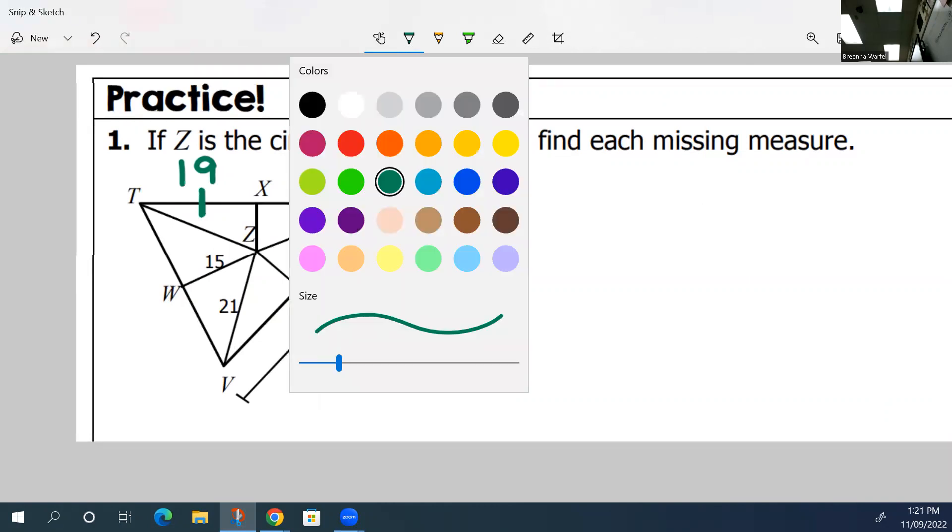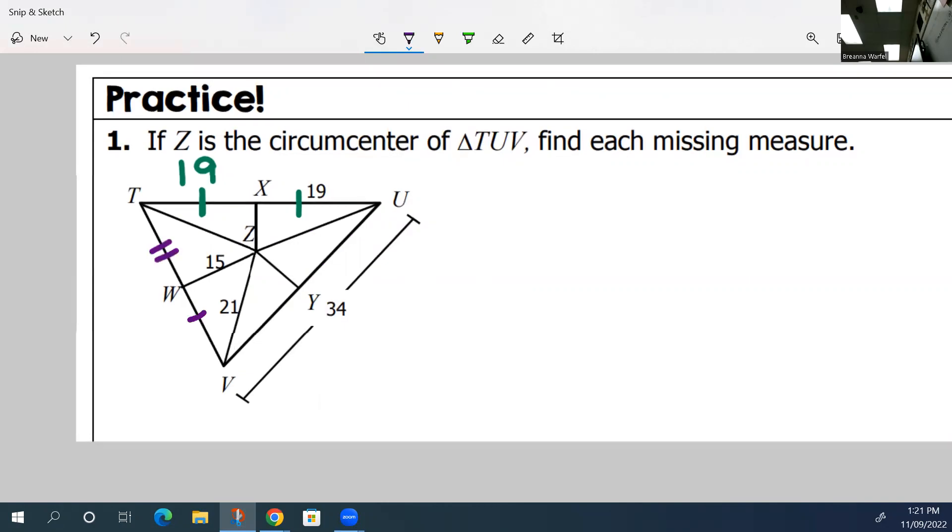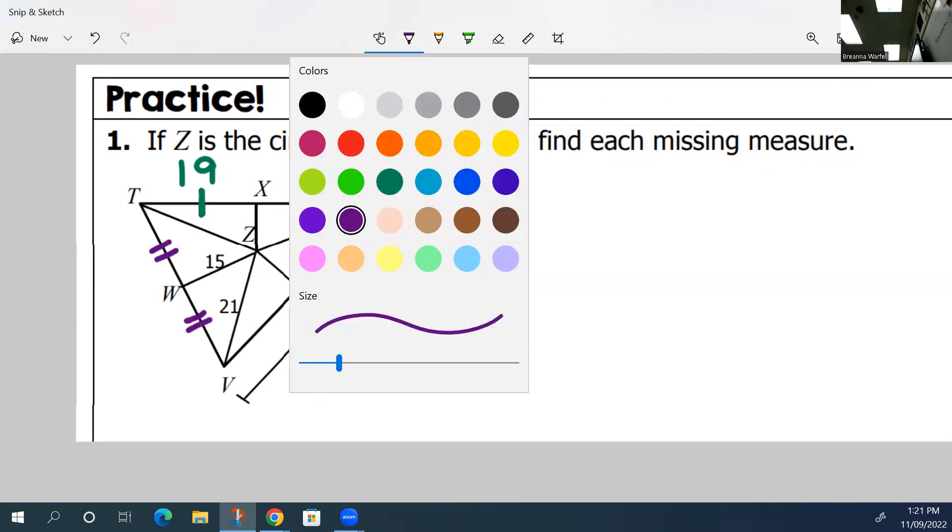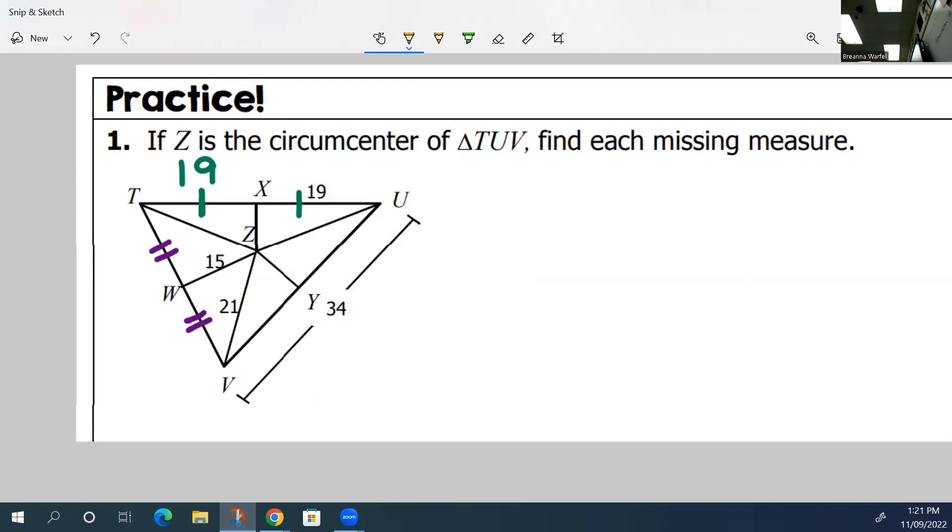That also means that this side is congruent to this side. That also means that this side is congruent to this side. We can actually figure that out because if we know the whole thing is 34, we could divide that in half. 34 divided by 2 is 17. So that means that each piece right here is 17 and 17.